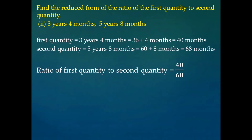The ratio of first quantity to second quantity is equal to 40 divided by 68. If we divide both quantities by 4, we will get 10 divided by 17. That is, the ratio of the first quantity to the second quantity is 10 is to 17.